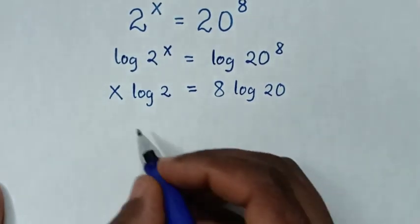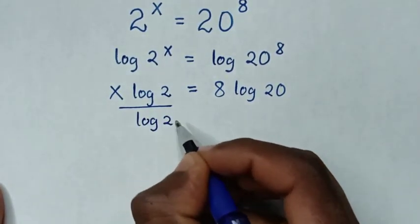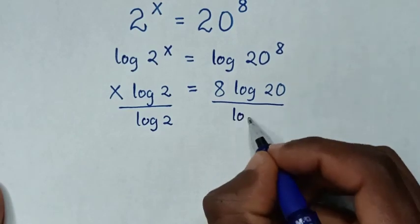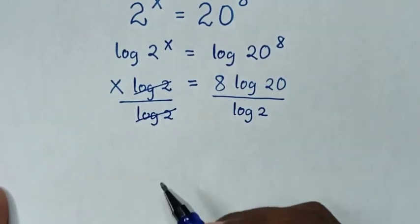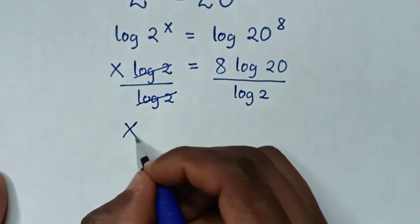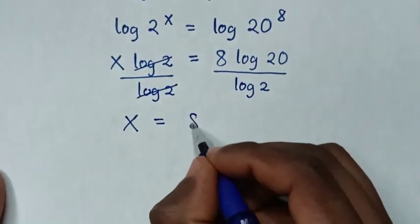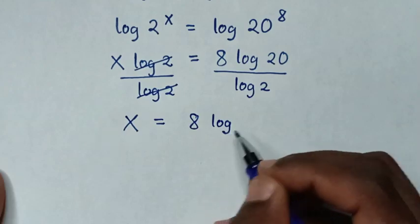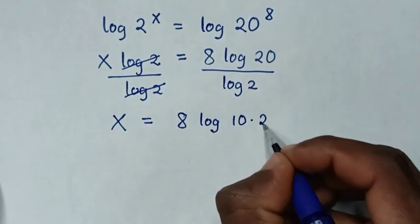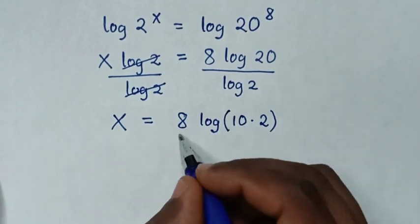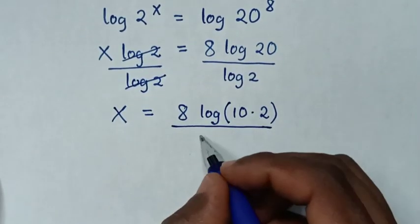Then we'll divide by log of 2 on both sides. So this and this will cancel, then it will be x is equal to 8 log of 20. 20 is same as 10 times 2, then over log of 2.